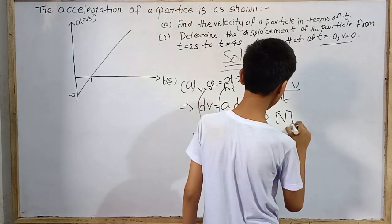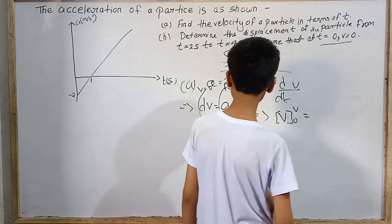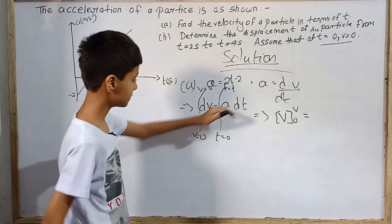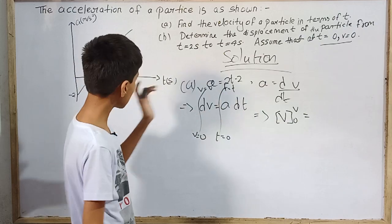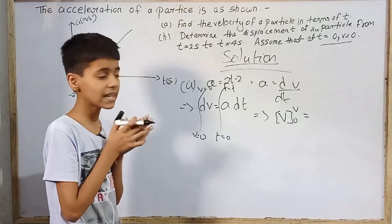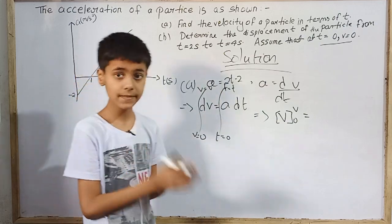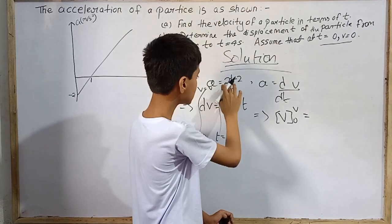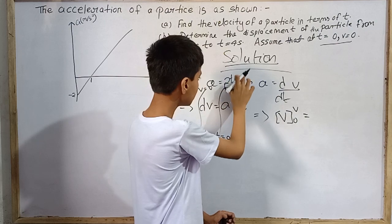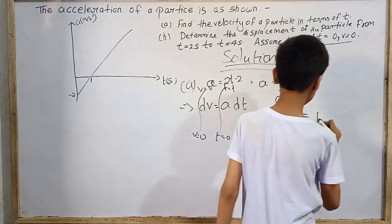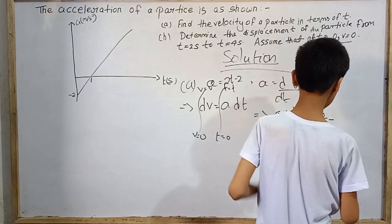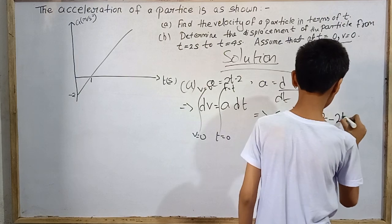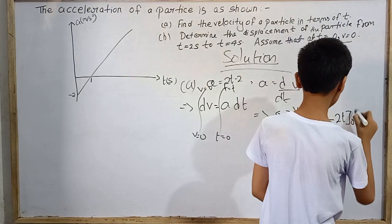So integral dv is simply v from 0 to v, which equals integral a. A is not a constant here, but the rate of change of a is constant. So integral a: this is 2t square by 2, which is t square minus 2t with respect to t. So t square minus 2t from 0 to t.